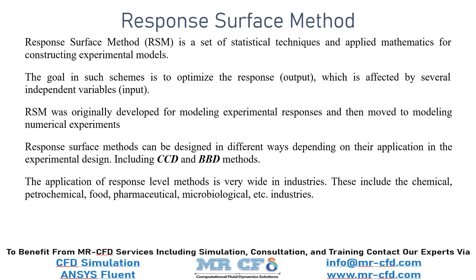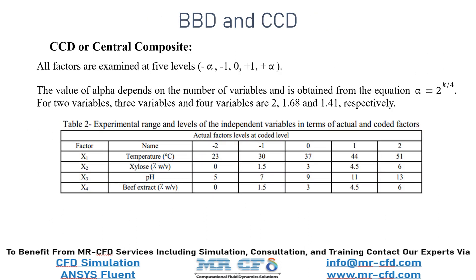CCD, or central composite method, has the same definition as the BBD method, with the difference that in this method, all factors are examined at five levels: minus alpha, minus one, zero, one, and alpha. The value of alpha depends on the number of variables and is obtained from the equation alpha equals 2 to the power of k over 4. For two variables, three variables, and four variables, alpha is equal to 2, 1.68, and 1.41, respectively.